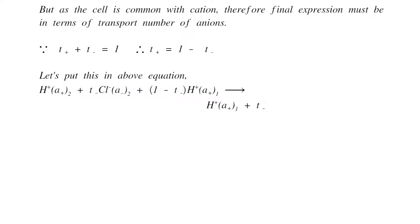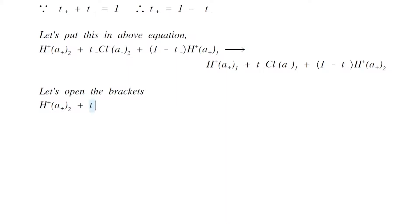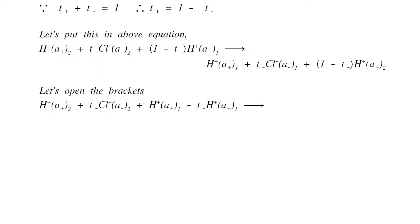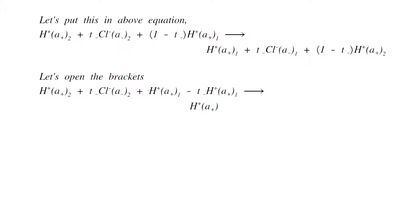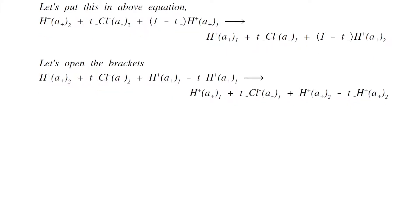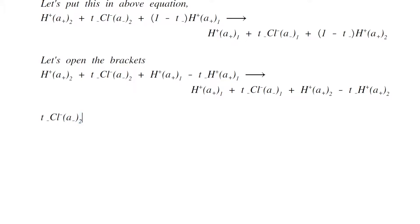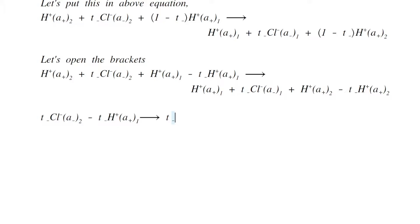This gives H+ ions of activity a1 plus T- gram equivalents of Cl- of activity a1 plus (1 - T-) gram equivalents of H+ of activity a2. Expanding the brackets: H+ of activity a2 plus T- gram equivalents of Cl- of activity a2 plus H+ of activity a1 minus T- gram equivalents of H+ of activity a1 gives H+ of activity a1 plus T- gram equivalents of Cl- of activity a1 plus H+ of activity a2 minus T- gram equivalents of H+ of activity a2.